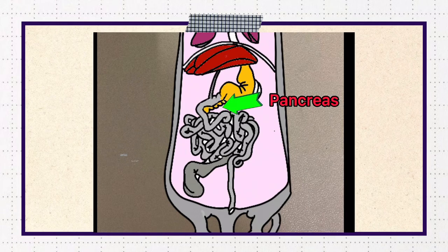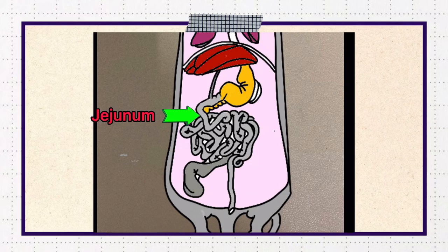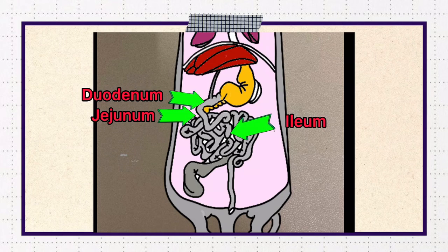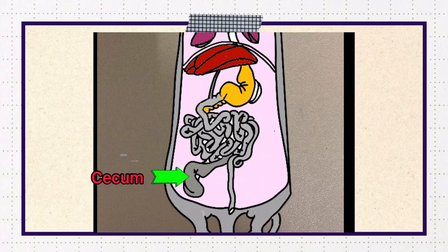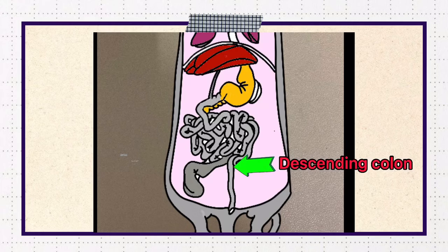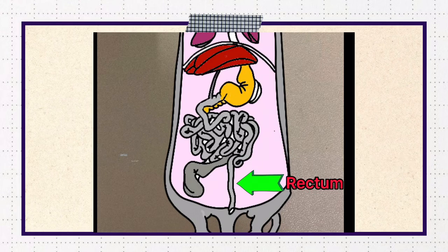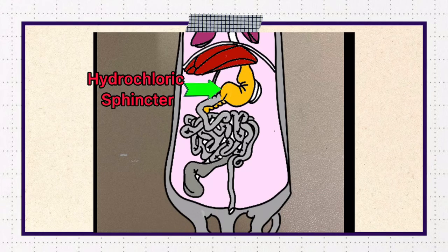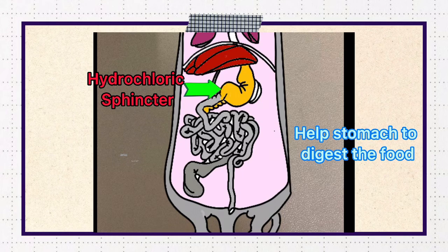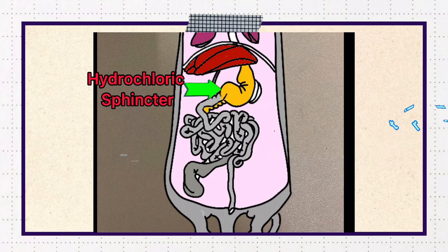The pancreas is a thin membrane that may be white and granular. There is also the jejunum, duodenum, ileum, cecum which is a pouch that connects the large and small intestine, the descending colon, rectum, and anus. There is also a pyloric sphincter that helps the stomach to digest food and kills bacteria that the animal ingests with its food.